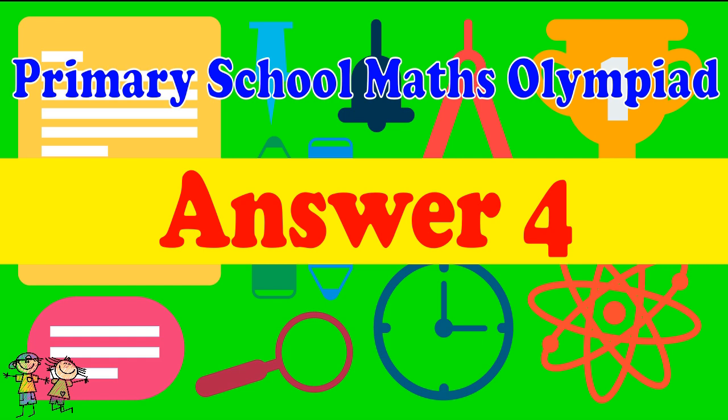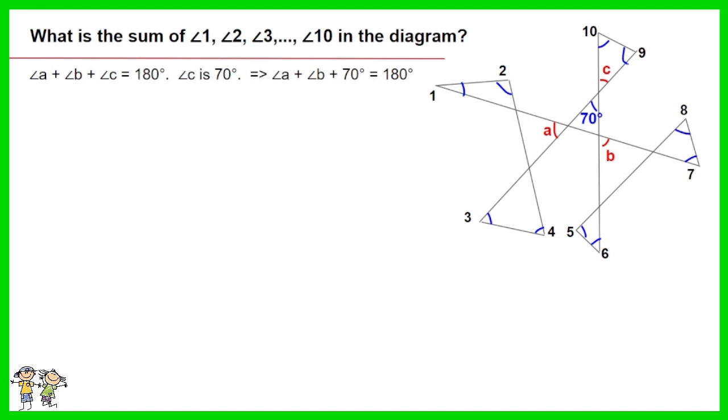Answer for question 4. Sum of angle A, B and C is 180 degrees. Angle C is 70 degrees. Thus angle A plus B plus 70 is 180 degrees. Angle A is 180 minus the result of 180 minus angle 1 and 2, then minus the result of 180 minus angle 3 and 4. The result is angle A equal to the sum of angle 1 to 4 minus 180. This is your equation 1.